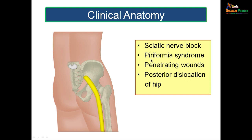Piriformis syndrome is an entrapment neuropathy. The sciatic nerve normally emerges below the piriformis through the greater sciatic notch, but if the piriformis muscle is enlarged — as seen in athletes, especially female athletes — it can compress the sciatic nerve, resulting in pain in the buttock area. Penetrating wounds on the back can also injure the sciatic nerve, particularly where it has a subfascial course between the gluteus maximus and the long head of biceps femoris.